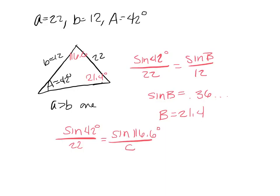It's just a matter of plugging this into your calculator. Sine of 116.6 times 22 divided by the sine of 42 — and we get that C is 29.4.